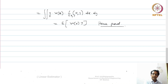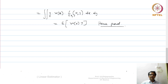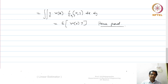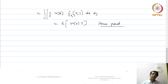Next we will look at what is called the normality theorem. This theorem reveals the equivalence between a linear estimator and a non-linear estimator — specifically, the conditions under which the conditional mean becomes a linear function of x. Under those conditions, the linear estimator is indeed optimal and no longer sub-optimal.